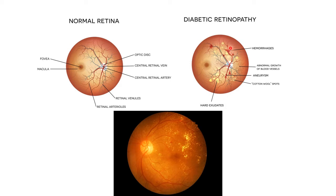As you can see, there are hemorrhages, abnormal growth of blood vessels, aneurysms, cotton wool spots, and hard exudates.